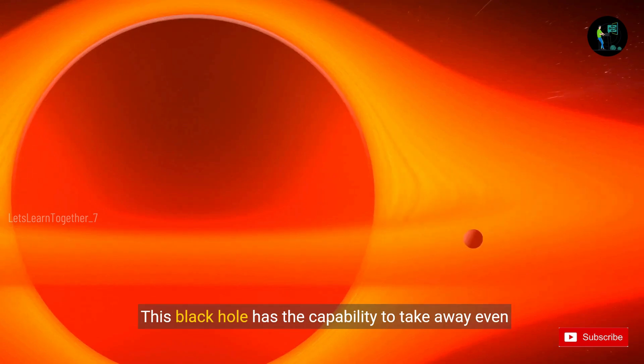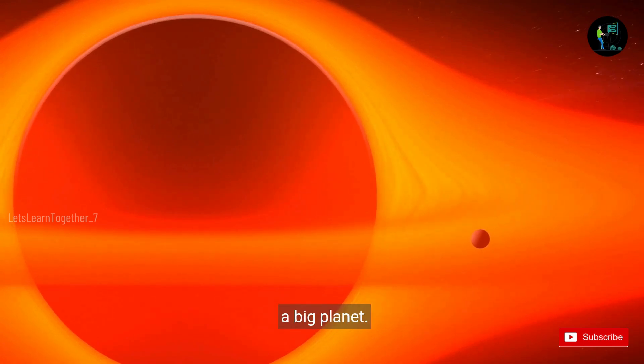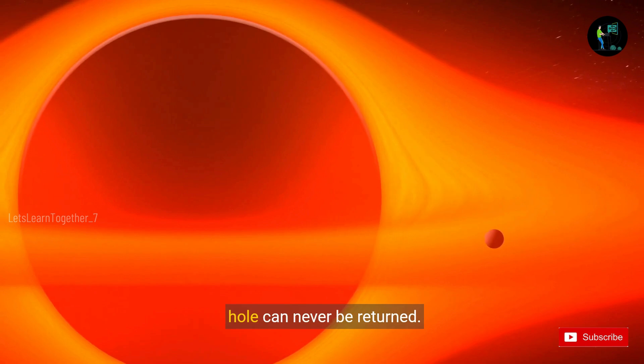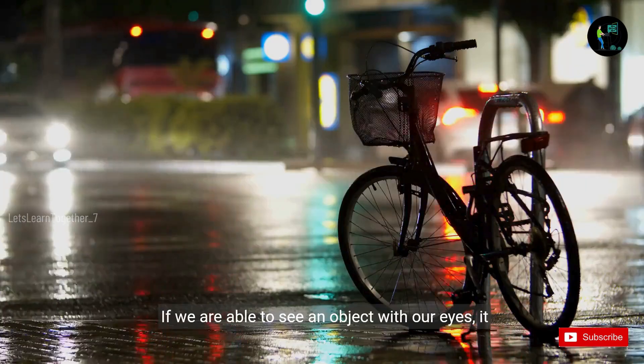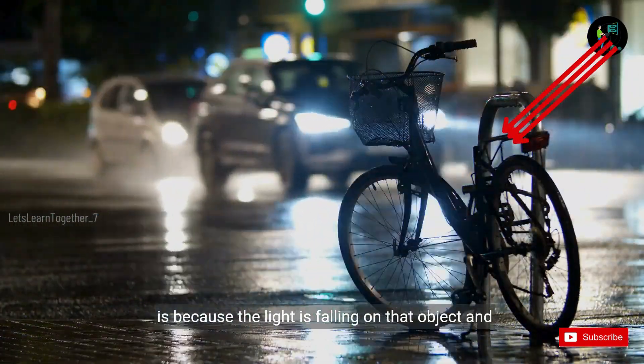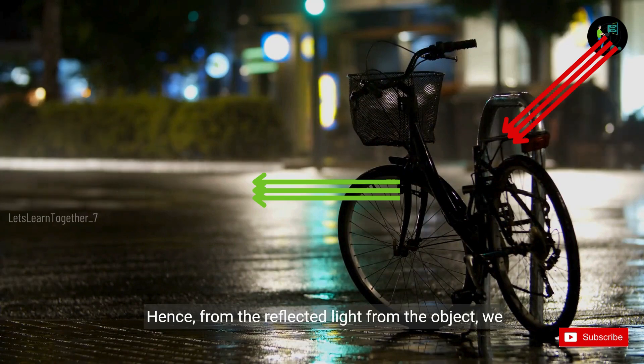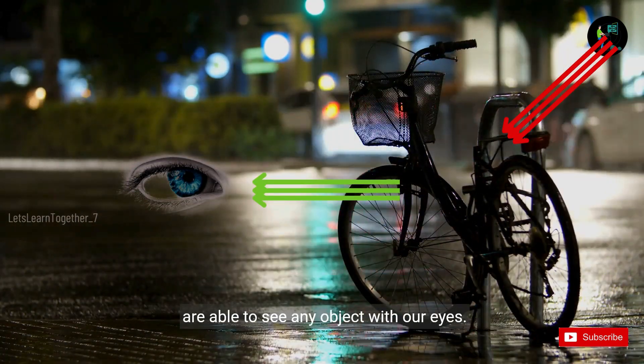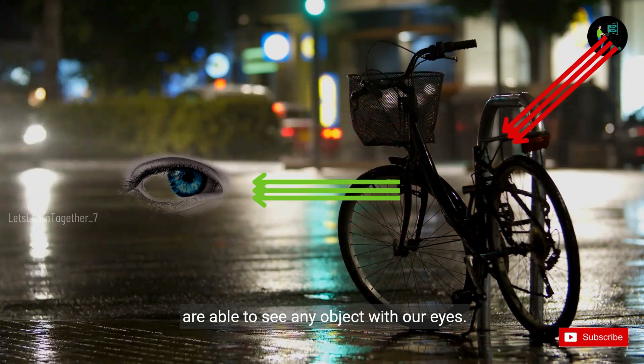This black hole has the capability to take away even a big planet. Whatever thing once enters into a black hole can never be returned. If we are able to see an object with our eyes, it is because light is falling on that object and reflecting back. Hence, from the reflected light from the object, we are able to see any object with our eyes.